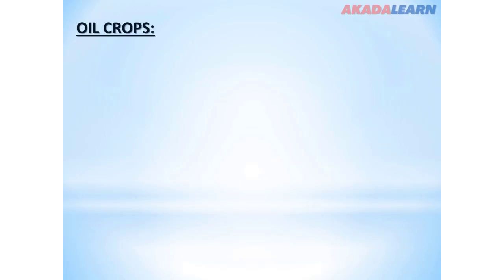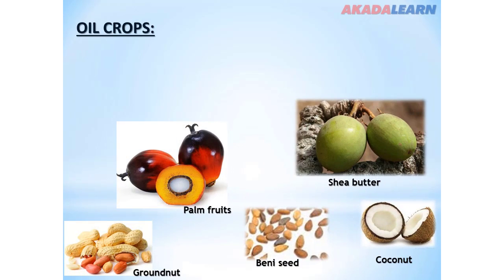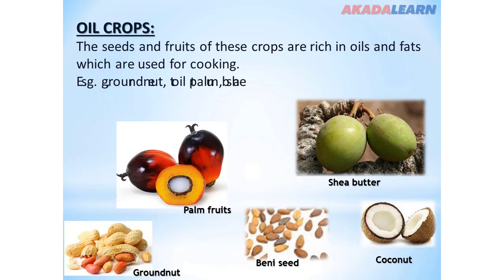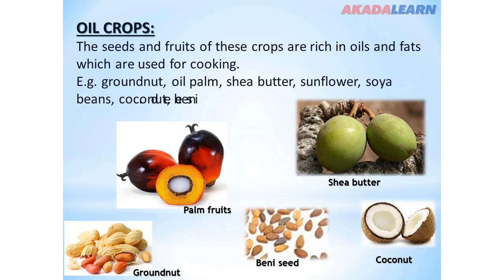We have the oil crops. These crops are rich in oil and fat which are used for cooking. Examples include groundnuts, oil palm, shea butter, sunflower, soybeans, coconut, and benniseed.